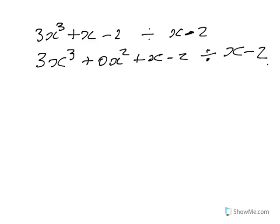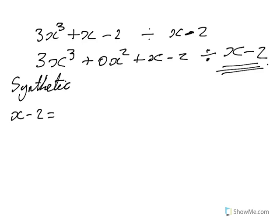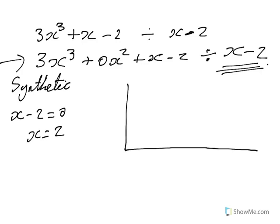Now I'm going to do synthetic division on this. For synthetic division, you look at what you're dividing by — x minus 2 — set that equal to 0, so x equals 2. We write out all the coefficients of the polynomial: 3 (for x cubed), 0 (for x squared), 1 (for x), and negative 2 (constant). We put x equals 2 on the side.